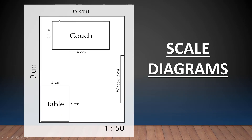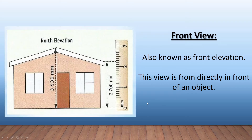Here's another example — a floor plan showing a table, a couch, a window, and the rest of the space. We can see the total area and this is working on a scale ratio as well.